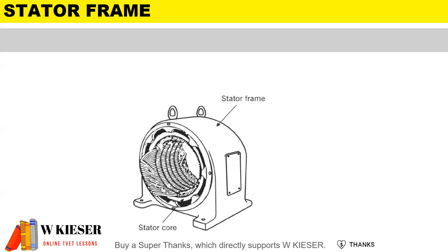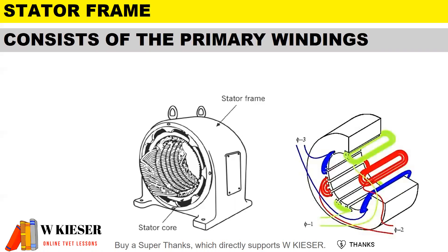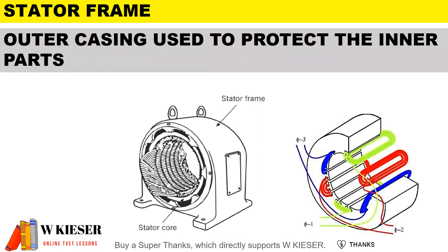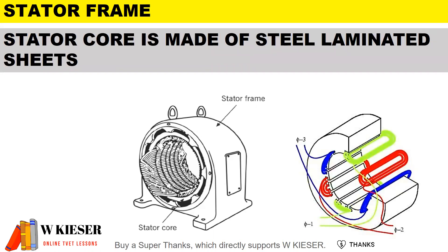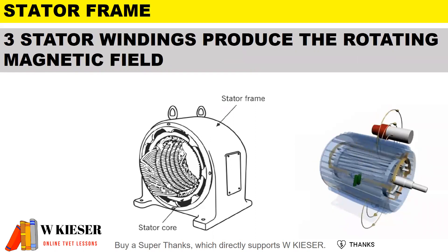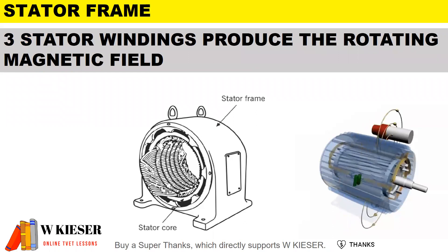Looking at the three-phase motor, we'll first take a look at the stator frame and then the rotor. For the stator frame, it consists of the primary windings. The outer casing is used to protect the inner parts. The stator core is made of steel laminated sheets, and the three stator windings produce the rotating magnetic field.